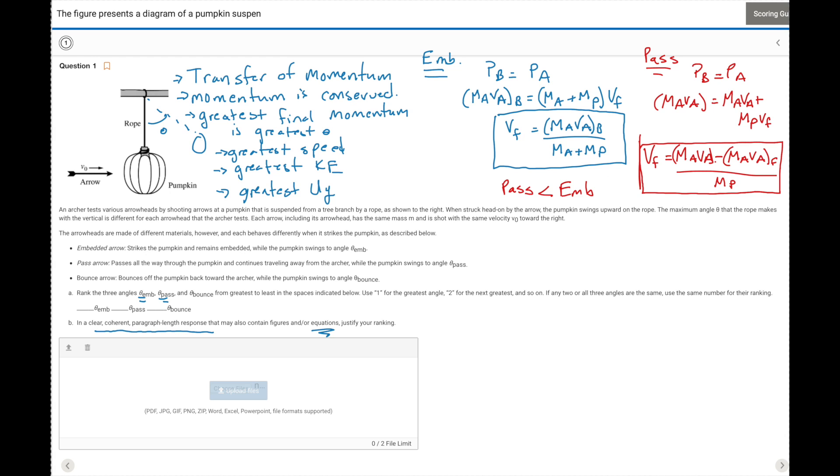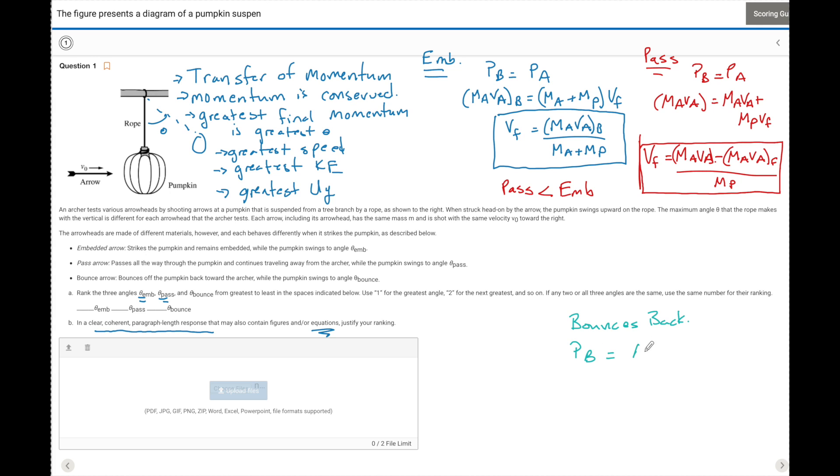So the last thing we just need to look at is what about if it bounces back? P before equals P after. Once again, we have that same M_A V_A initial. And that's going to be equal to the M pumpkin V pumpkin after minus... Now this is a minus because it bounces back. This leads to this bounce back. So it's going to go in the negative direction.